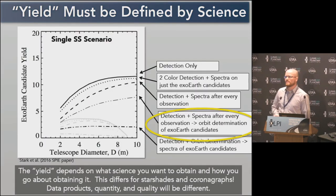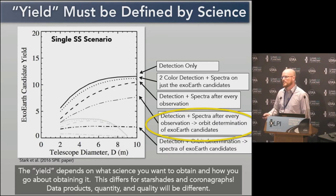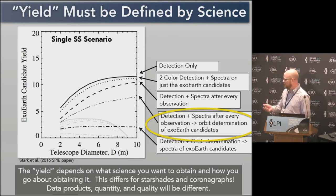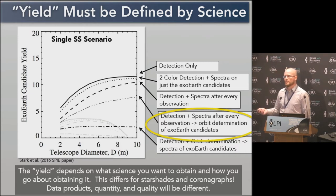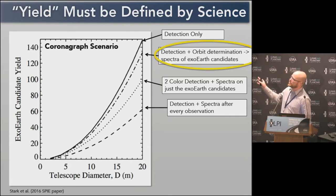Because of these strengths and limitations, it matters very much how you choose to operate that instrument, and so we've done yield calculations. For a starshade, if you first measured orbits of all planets and then followed up with spectral characterization, that would be really inefficient because repointing is very costly. We think the most efficient way to observe with a starshade is to take spectra every single time you observe, then follow up only the most promising targets to measure their orbits. For a coronagraph, this scenario is essentially the opposite — coronagraphs actually prefer to revisit a system multiple times to increase completeness.